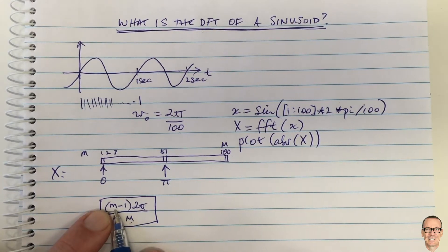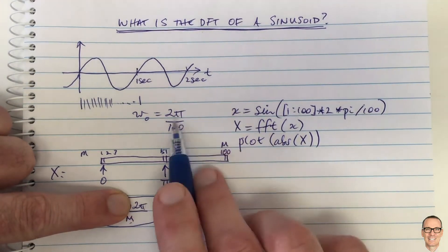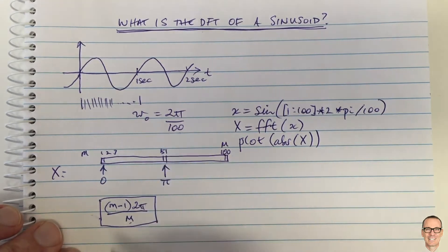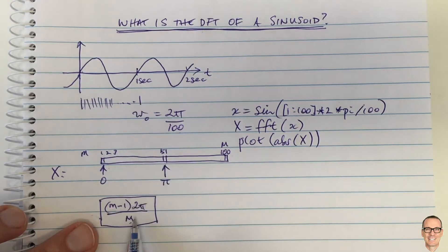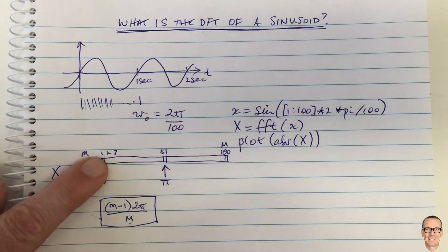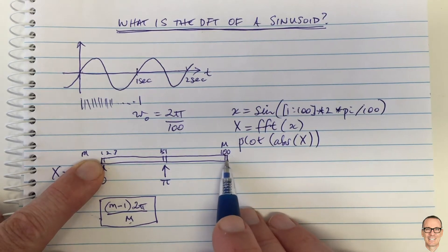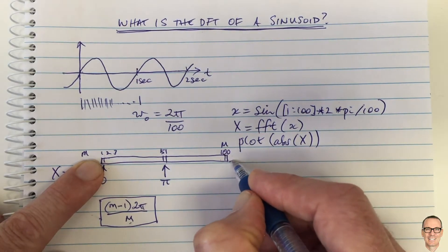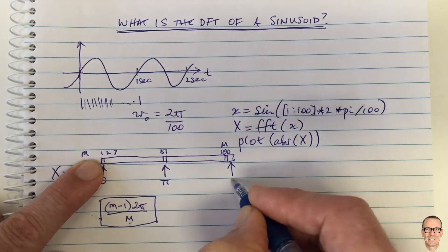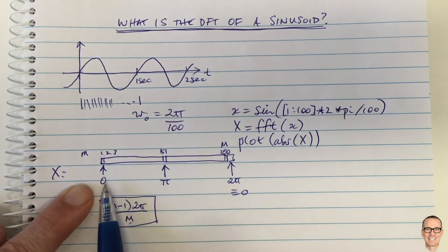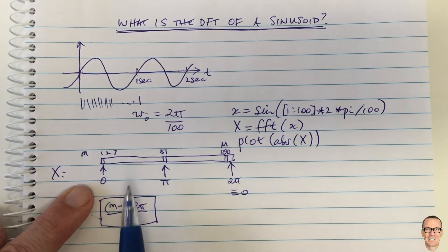With M = 100 and target frequency 2π/100, we need (m − 1) = 1, so m = 2. There will be a spike at element 2. There's also a spike at element 100 because element 101 — which would correspond to frequency 2π — is equivalent to zero frequency, since the DFT basis functions repeat in discrete time.